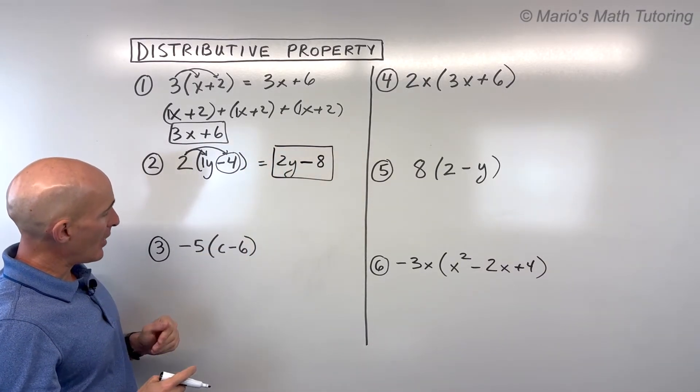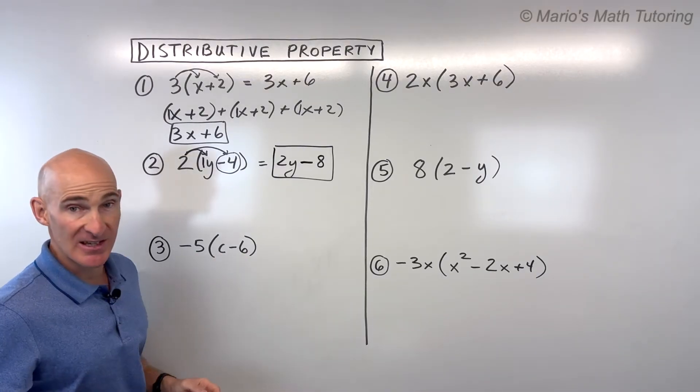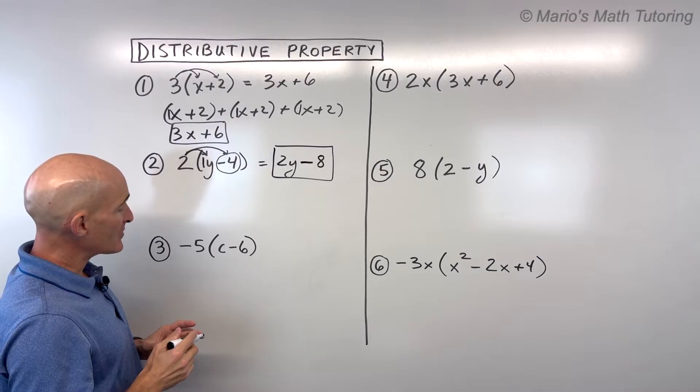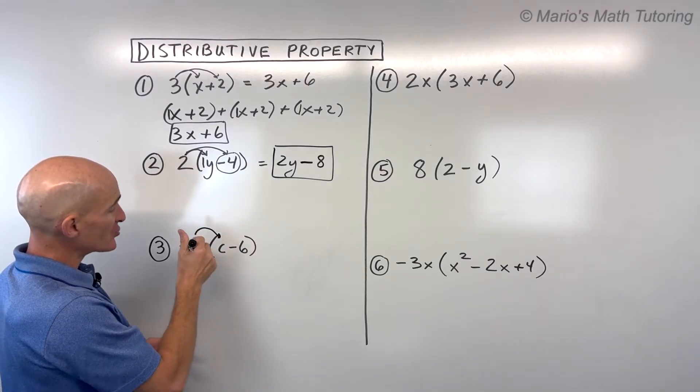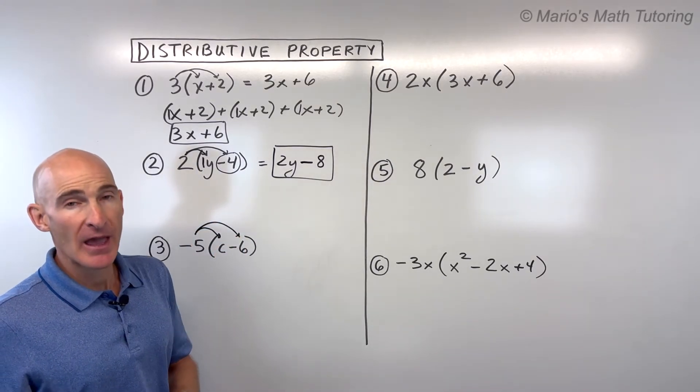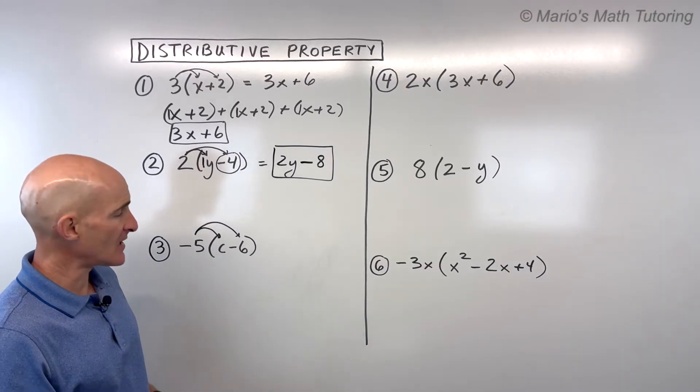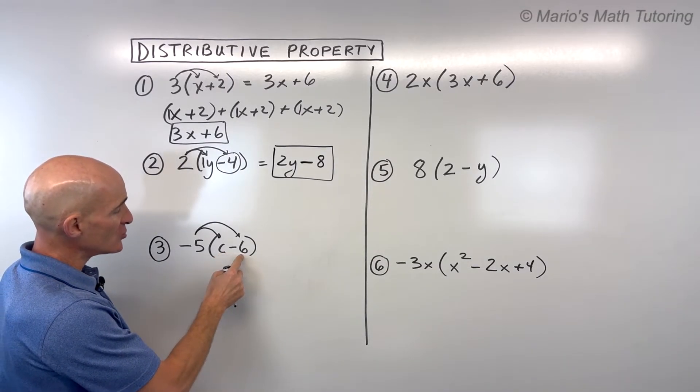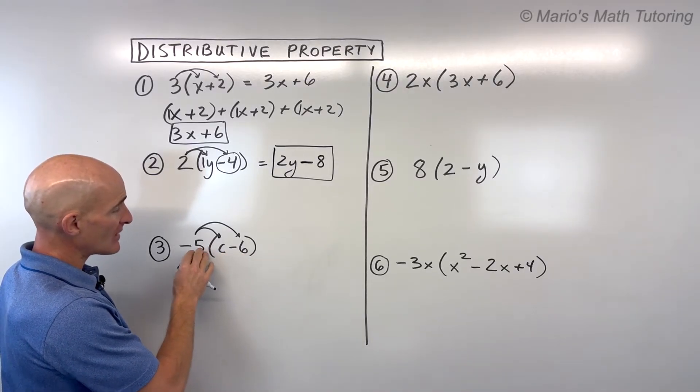Let's look at number three now. Here we have negative five times the quantity c minus six. Now, again, the mistake that students sometimes make is that when they're distributing, they either forget to distribute or multiply to everything that's inside the parentheses. And remember, the terms are always separated by a plus or a minus sign. So a term is kind of like a group. You can see there's like two terms here or two groups. So we have to multiply negative five times both of them.